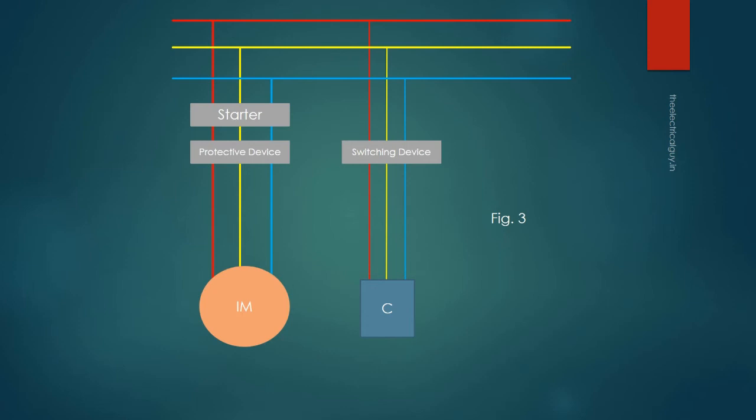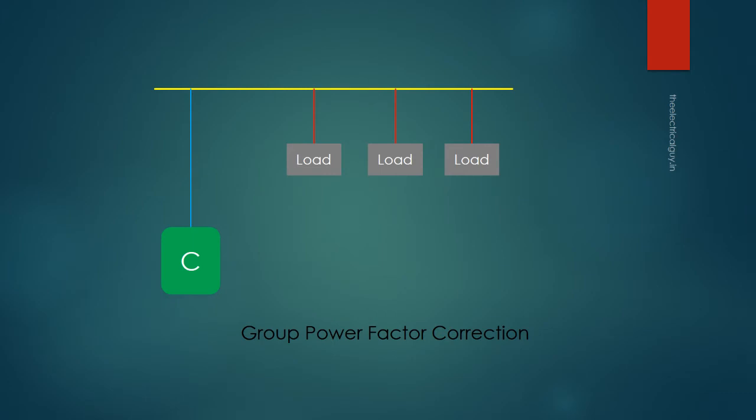Group power factor correction: this method is generally used for loads which have similar functioning. A common capacitor bank is provided to improve the power factor as shown in the figure.